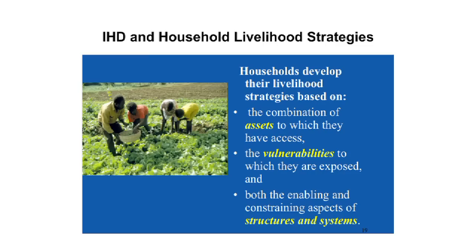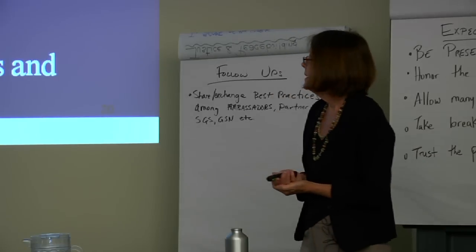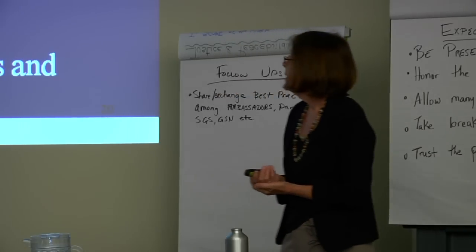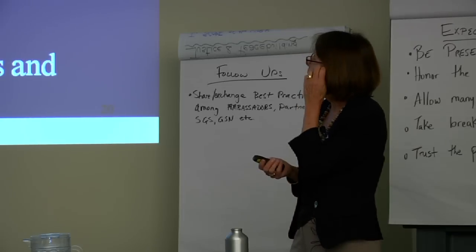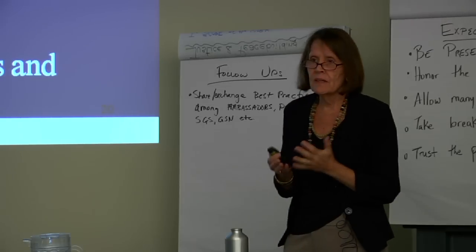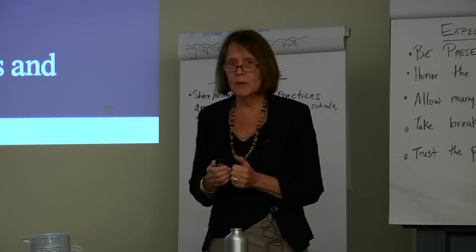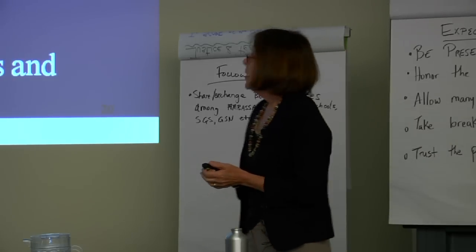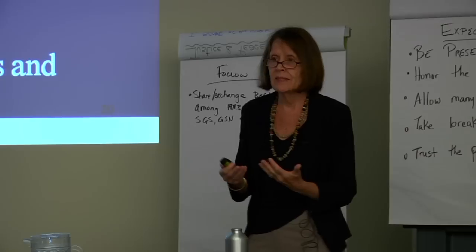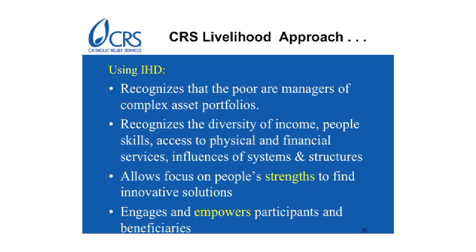There again, we can look at assets, we can look at what the vulnerabilities are in particular — because that's part of that framework — and then really see what structures and systems need to be addressed if we are going to move into concretely coming up with strategies that work. I think for CRS, this is really the approach we've used. We see these beneficiaries as having a great deal of capacity to be managers of those complex assets that exist in their communities. We recognize the diversity of all of those pieces to that puzzle, and we really spend a great deal of time focusing on the strengths and the innovations that need to happen in order to make our programs better.